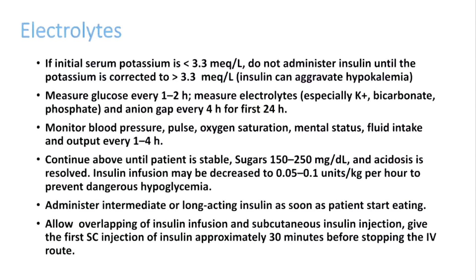When treating DKA, an important problem is potassium deficiency. Many patients with high blood sugar have relative potassium deficiency due to shift hypokalemia. If the initial serum potassium is less than 3.3 mEq/L, do not give insulin until potassium is corrected via peripheral or central line KCl infusion to above 3.3 mEq/L. Measure glucose every 1 to 2 hours. Measure electrolytes, potassium, bicarbonate, phosphate, and anion gap every 4 hours for the first 24 hours. Monitor blood sugar, blood pressure, pulse, oxygen saturation, mental status, and fluid intake/output every 1 to 4 hours.